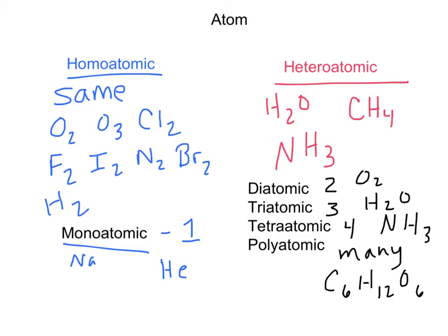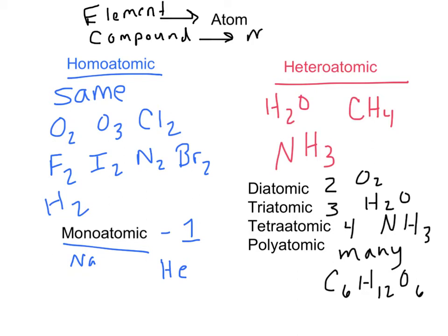Remember that the atom is the smallest an element can break down into. For a compound, the smallest unit that still retains the compound's identity is a molecule — a group of atoms that hang together. If I go smaller than a molecule, I become individual elements, which break down to atoms. So an element subdivides smallest into an atom, and a compound subdivides smallest into a molecule.